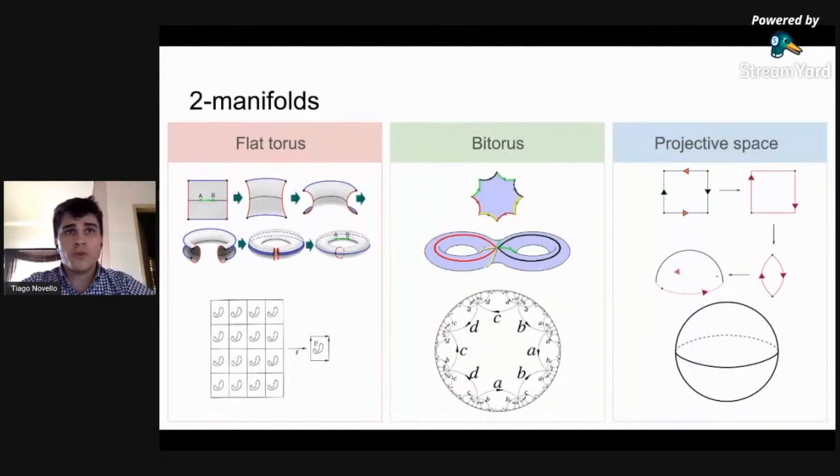In dimension two, for example, there are exactly three geometry models. We give one example of a compact surface for each geometry. On the left, the two-dimensional torus admits an Euclidean geometry, thus identifying the opposite sides of a square.